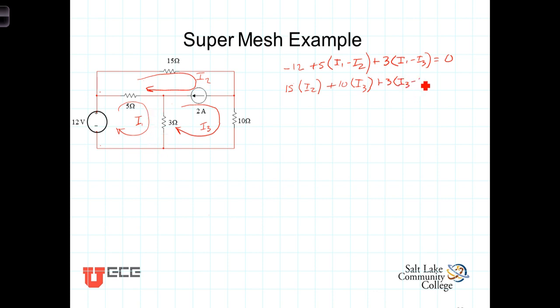I3 minus I1, plus the voltage drop across that 5 ohm resistor is 5 times, and again because we're going from right to left, the current going in that direction will be I2 minus I1. The sum of those terms must equal 0.